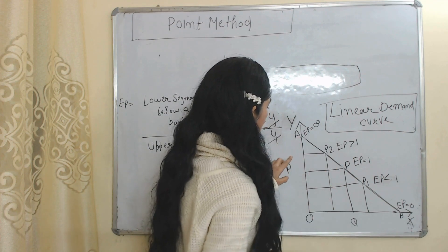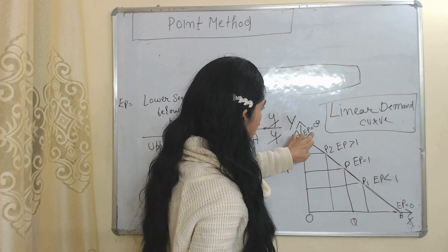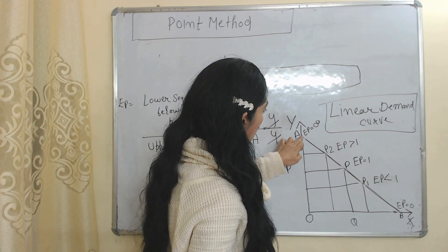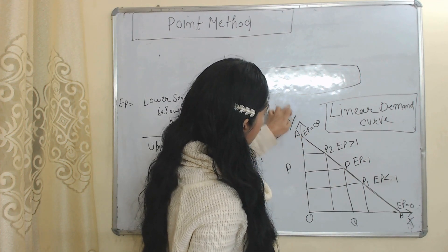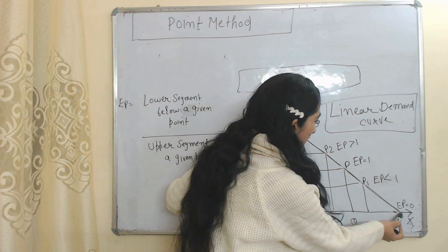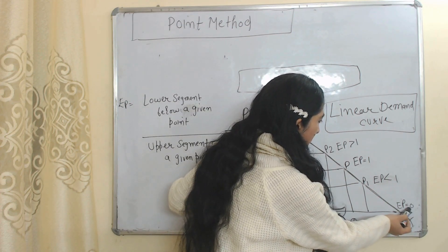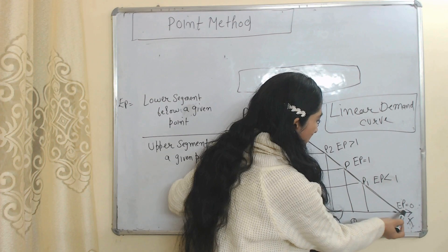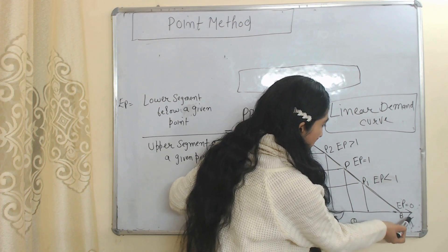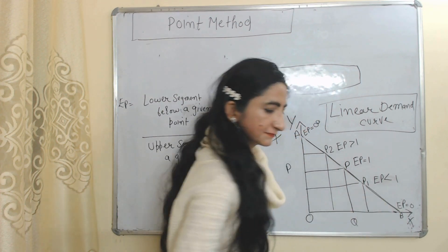At point A, price elasticity of demand is infinity because there is no upper segment above point A. At point B, price elasticity of demand is equal to 0 because there is no lower segment below point B.